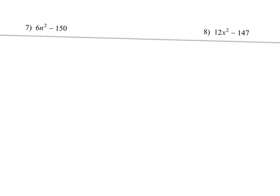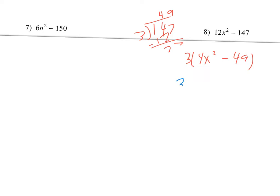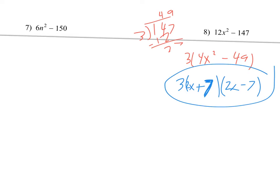Next up, number eight. I think there's a GCF again — I think it's 3. Does 147 divide by 3? Yes: 12 divided by 3 is 4, and 147 divided by 3 is 49. So I still have that x squared and then minus 49. I break it apart again — all perfect squares. The square root of 4 is 2, the square root of x squared is x, and this one is 7. So it's 2x plus 7 and 2x minus 7. The order on those does not matter.